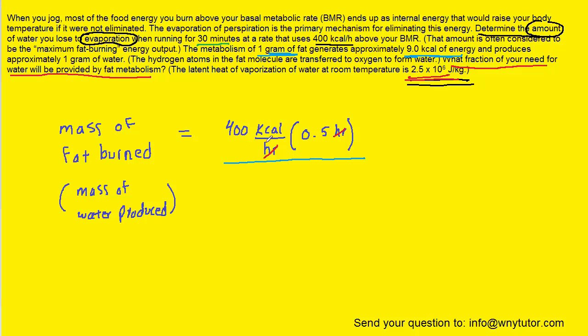So in essence, if we divide our kilocalories by the quantity 9 kilocalories per 1 gram of fat, then the kilocalories will cancel, and that's going to leave us with grams of fat, which is exactly what we were trying to calculate. So we'll work this all out. And we get roughly 22 times 10 to the minus 3 kilograms.